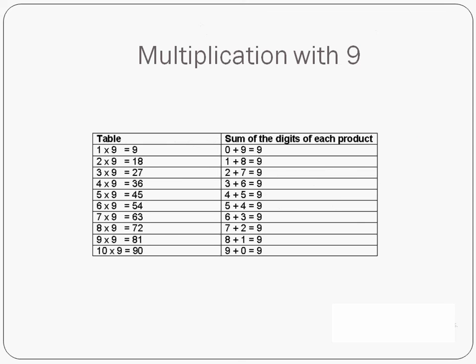Before moving on, let me share a fun fact about the 9 times table. If you look at the table of 9: 9×1=9, 9×2=18 and 8+1=9, 9×3=27 and 2+7=9 — all the way to 9×10=90 and 9+0=9. So in any multiple of 9, if you sum all the digits you always get back to 9. You can use this property in getting outputs without doing multiplication when working with 9.